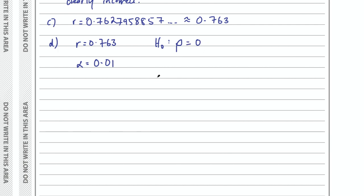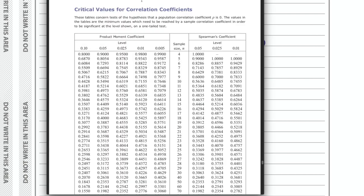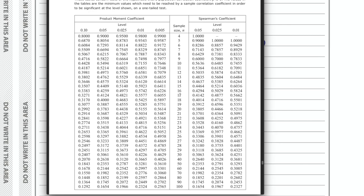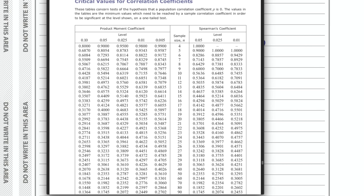The alternate hypothesis H1 is rho greater than 0. We have a sample size of 10. From this information we need to find a critical value from the table. Pull up the table from your formula booklet — critical values for correlation coefficients, page 37. Using sample size 10 and significance level 0.01, we get a critical value of 0.7155.